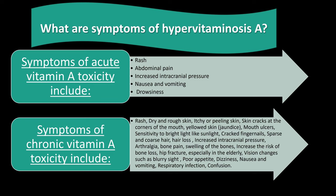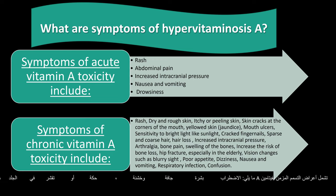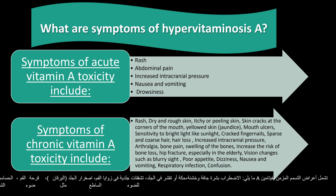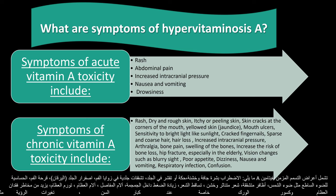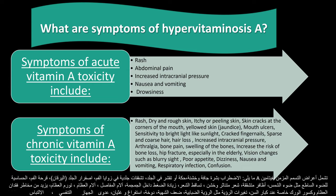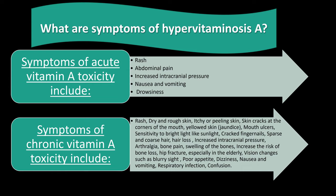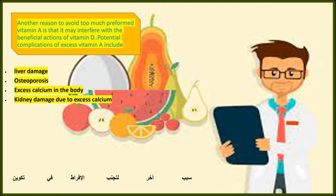Symptoms of chronic vitamin A toxicity include rash, dry and rough skin, itchy or peeling skin, skin cracks at the corners of the mouth, yellowed skin, jaundice, mouth ulcers, sensitivity to bright light like sunlight, cracked fingernails, sparse and coarse hair, hair loss, increased intracranial pressure, arthralgia, bone pain, swelling of the bones, increased risk of bone loss, hip fracture especially in the elderly, vision changes such as blurry sight, poor appetite, dizziness, nausea and vomiting, respiratory infection, and confusion.